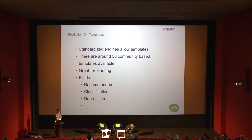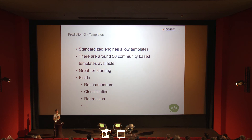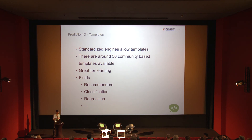One more thing I mentioned earlier: since all components in Prediction.io are standardized, you have templates — similar to how web frameworks have plugins. They use the DASE acronym: Data Acquisition, Sourcing, and Evaluation. On their website there are around 50 to 60 templates for recommenders, classification, and regression problems, which is a strong source for learning. When you're new you can see how these problems were solved, and really learn a lot by studying these examples.